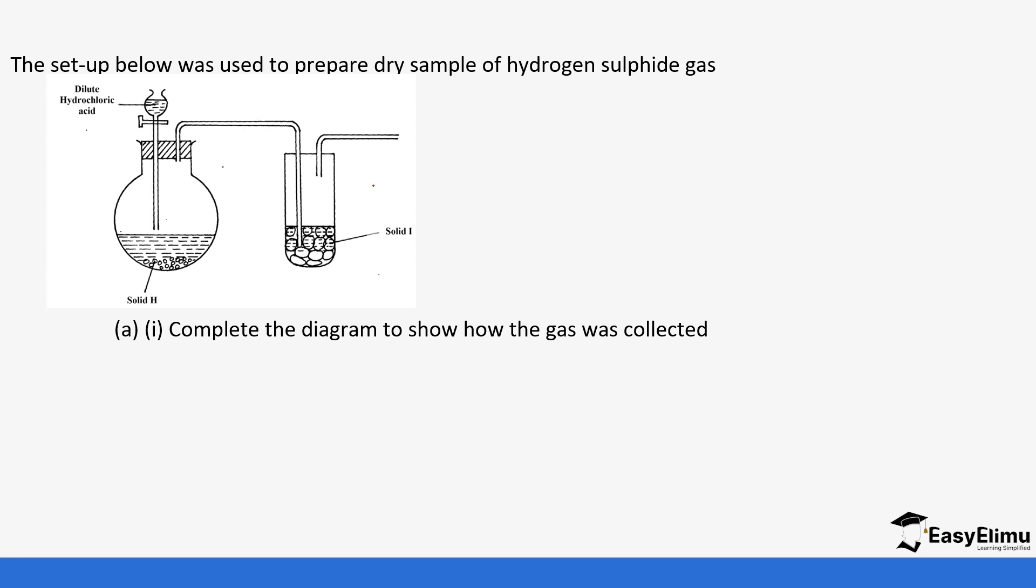Complete the diagram to show how the gas was collected. The first thing we need to identify is this tube here. The moment you see this tube, it means it's going to be dried—this is used for drying.